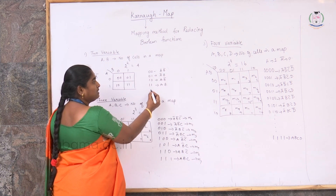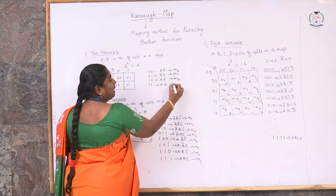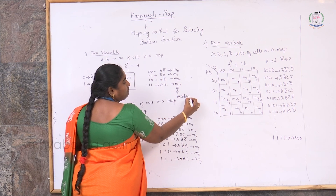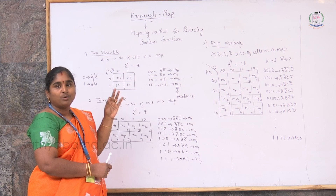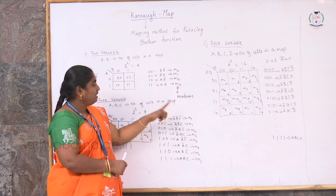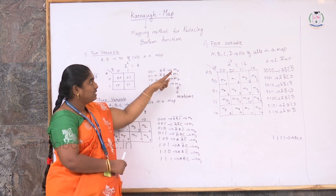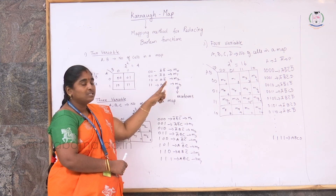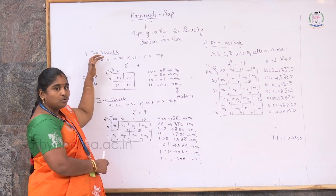These combinations 0,0; 0,1; 1,0; and 1,1 can be given as M0, M1, M2, and M3. These are represented as min terms. When a function is a standard sum of products (SOP) form, the terms inside the function are called min terms, represented with a small m. So 0,0 is M0; 0,1 is M1; 1,0 is M2; and 1,1 is M3. This is the outline of a K-map where you have only 2 variables, with a 4-cell structure.